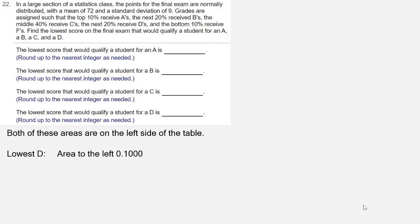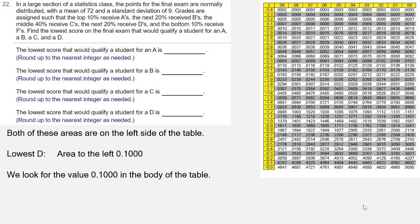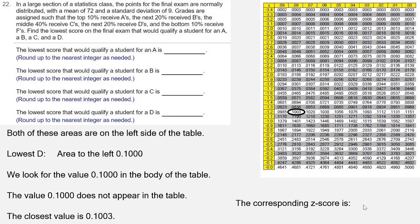So for the lowest D, the area to the left is 0.100. We look for that in the body of our table on the negative side. It's not in the table, but the closest value to it is 0.1003, which has a corresponding Z-score value of negative 1.28.